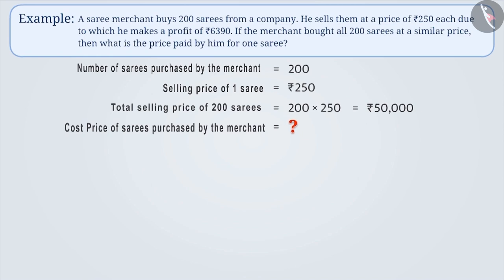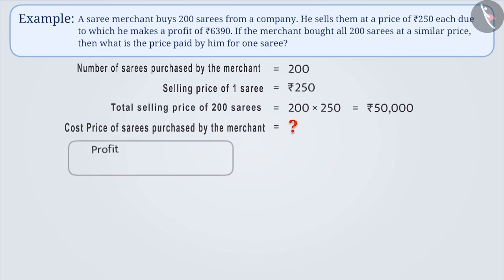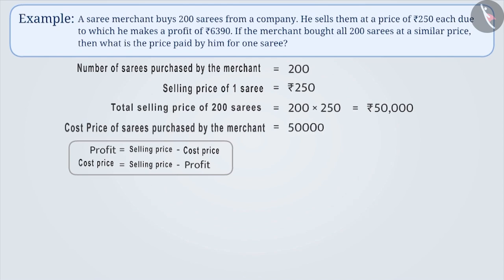Just think of how we are going to do this. Since profit is equal to selling price minus cost price, the cost price can be obtained by subtracting the profit from the selling price. So, cost price is equal to Rs. 50,000 minus Rs. 6,390, which is equal to Rs. 43,610.